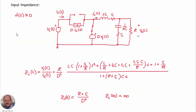From the small signal circuit, if we want to obtain the input impedance of our converter, we set the perturbations on the duty cycle to zero, and we obtain this equivalent circuit. This circuit is very easy to analyze. We obtain the input impedance by calculating the input current, and then dividing the input voltage over the input current, giving us the expression corresponding to the input impedance of our converter.